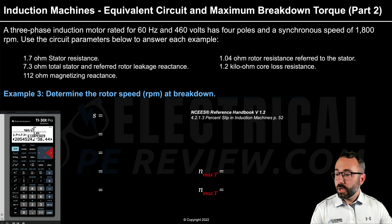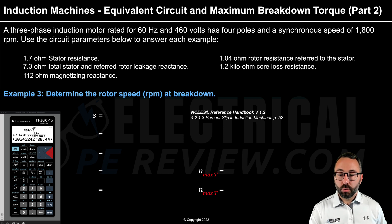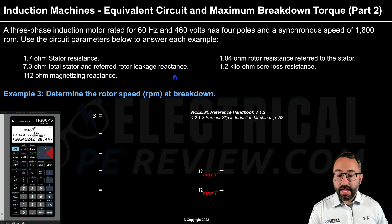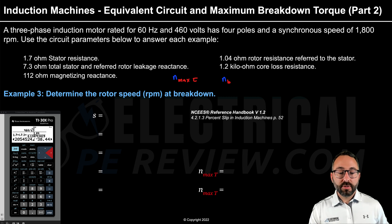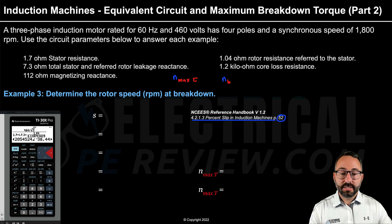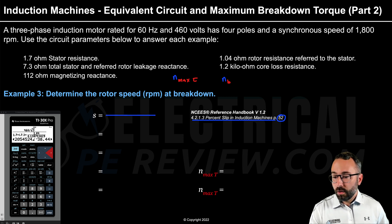For part two of this video, example number three asks: determine the rotor speed at breakdown. So we're not solving for the rated rotor speed n — we're solving for the rotor speed n at maximum torque conditions, or we can say we're solving for n, the rotor speed at breakdown.